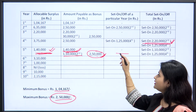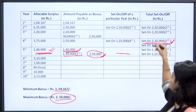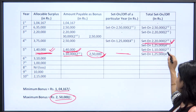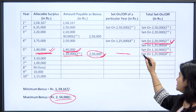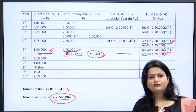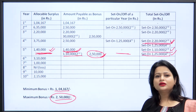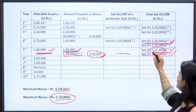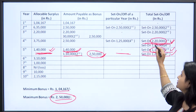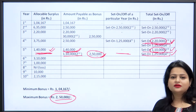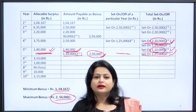For the fifth year there is no set on and set off for this particular year. Looking at the total set on and set off: we have set on of rupees 1,10,000 remaining from the second year, and set on of rupees 1,25,000 from the fourth year. We consumed 1,10,000 from the original 2,20,000 second year set on, so 1,10,000 remains. The situation of the fifth year is clear.